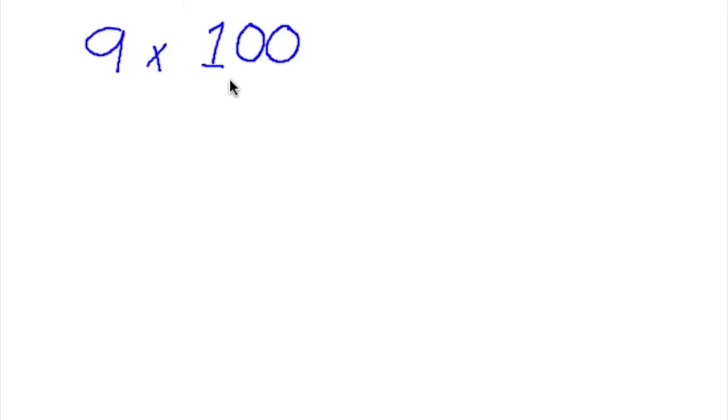I can multiply 9 times 10 without any trouble. But 9 times 100? Can I do that? I'm going to show you a trick that you can use for a number that ends in zeros, like 100. It'll make multiplying a lot easier than you think.